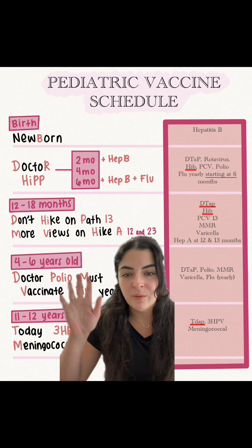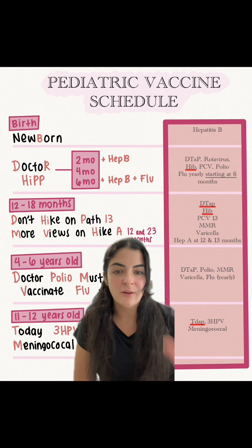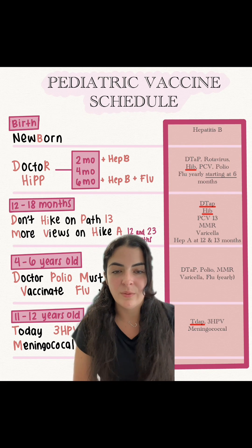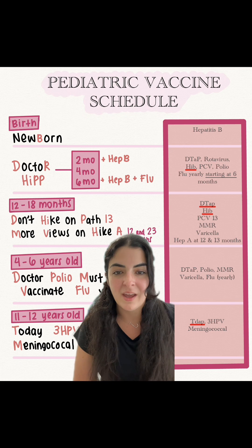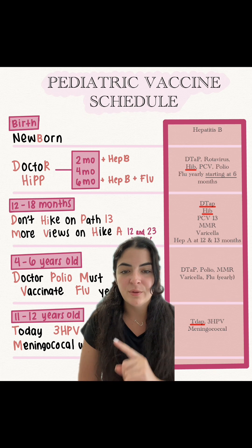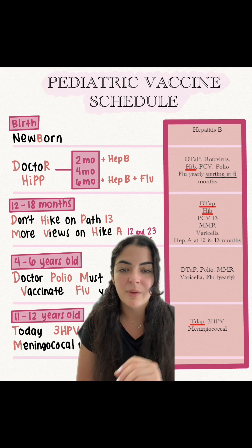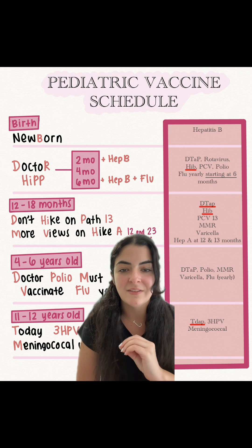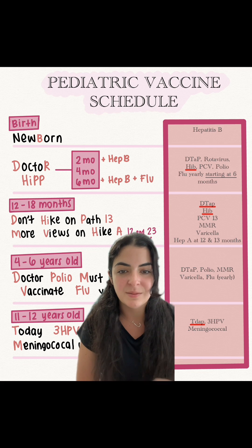Over here we have the age group with the mnemonic, and then over here we have the vaccines that correlate with the mnemonic. Let's start off with birth. In newborn, just remember the B — you just have to give hepatitis B.